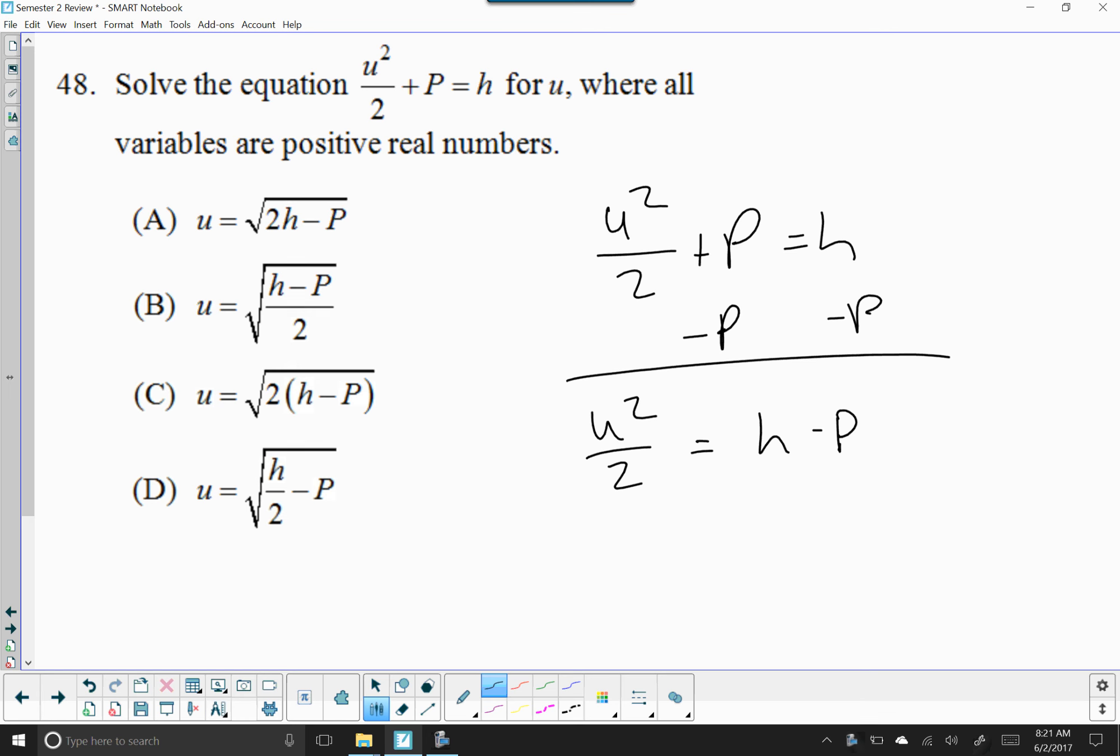What undoes dividing by 2 is multiplying by 2, so we're going to multiply both sides by 2 and we get u squared equals h minus p times 2.